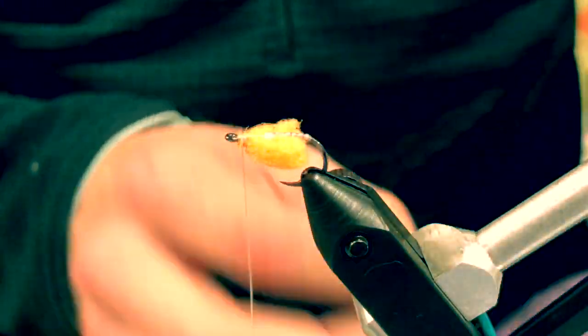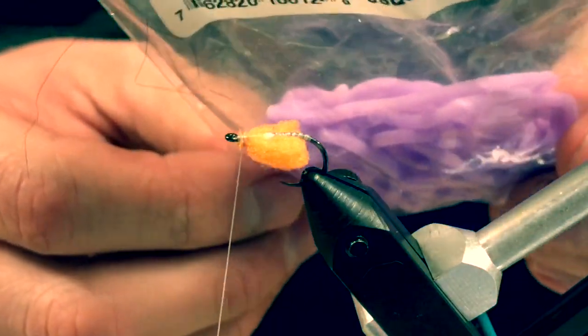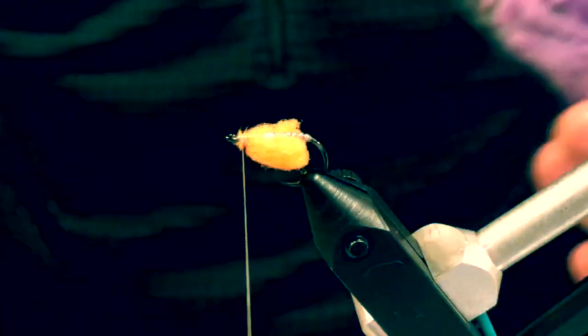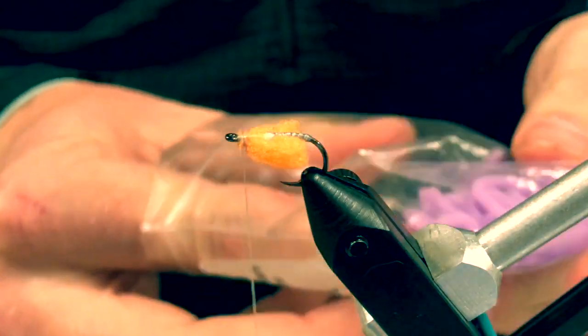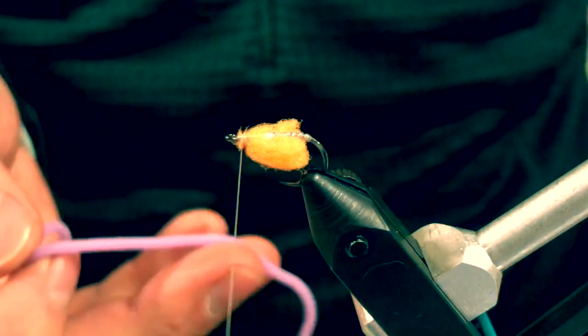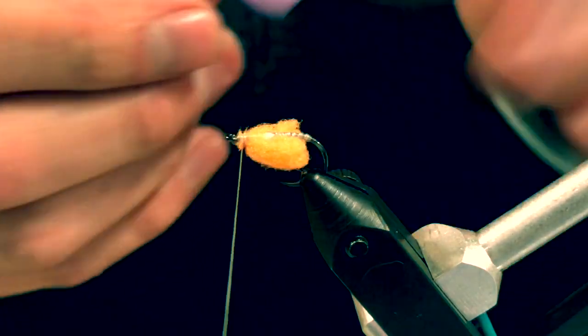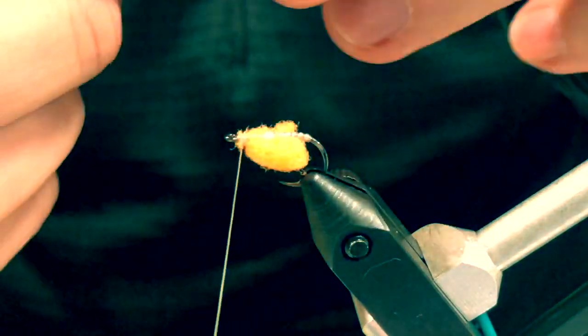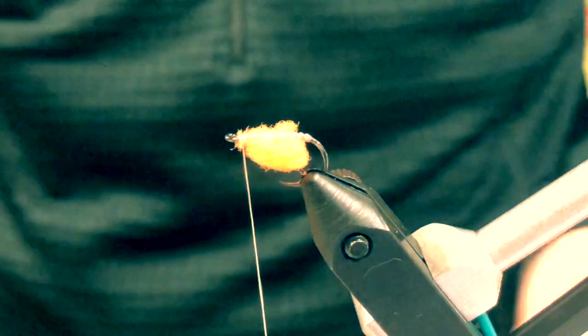The next material is this squirmy wormy stuff—Squirmito, and this is the violet color. I like this color; you could probably use pink, but this lavender violet color is nice. If you look at a photo of these things, they do have that purpley hue and it just looks kind of fleshy. I'm sure you could use pink or clear maybe.